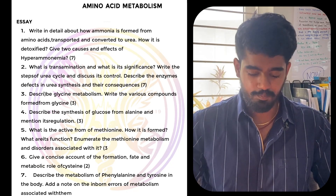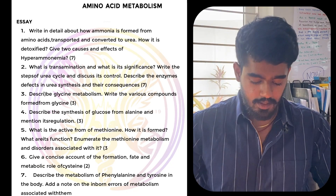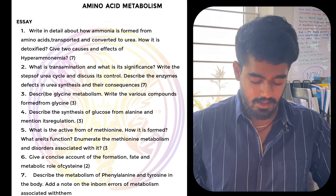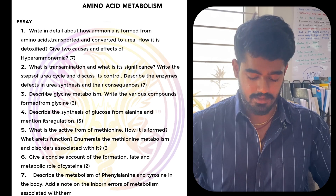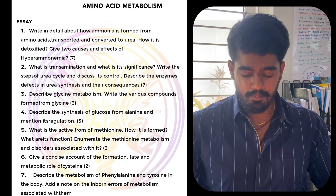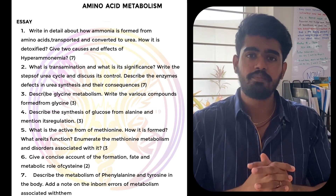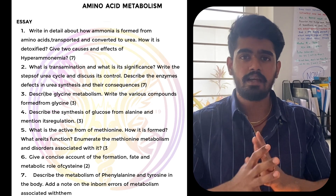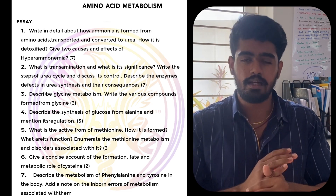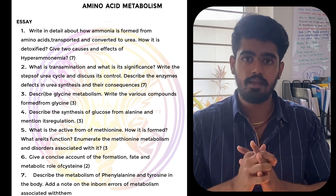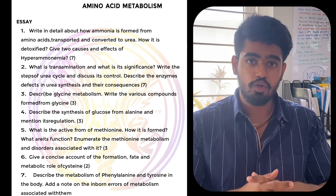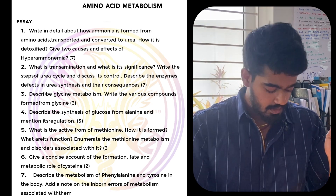Coming to paper 2 biochemistry — for amino acid metabolism, study hyperammonemia, transamination, glycine metabolism, and methionine metabolism. Have a basic idea about all the amino acids — classify them and study accordingly. That will definitely be useful. Short notes will be repeating from the essays, so that's not a problem.